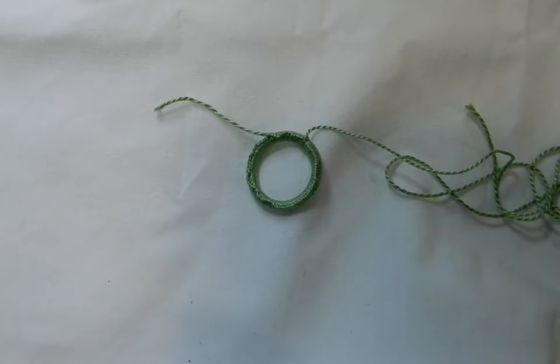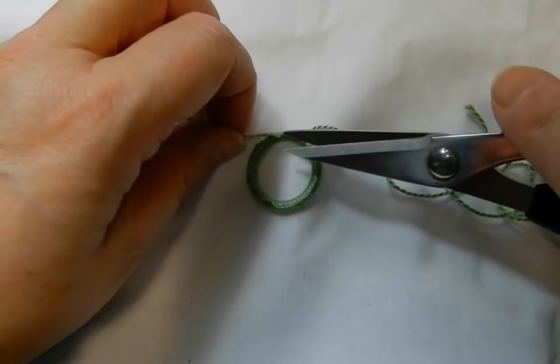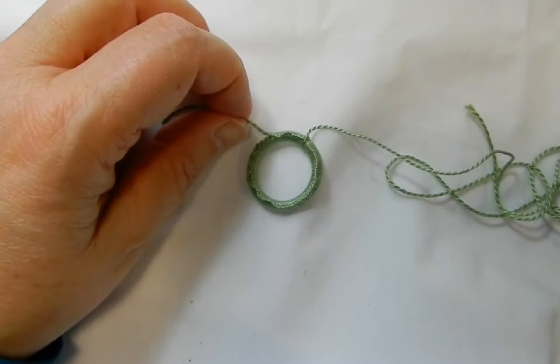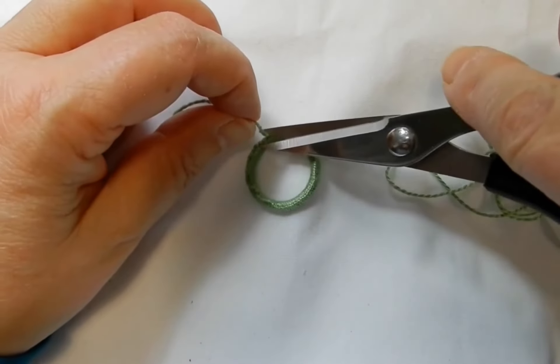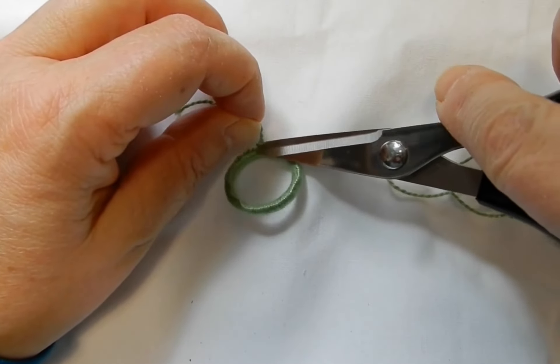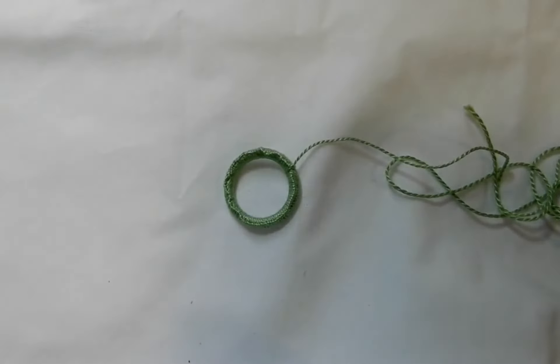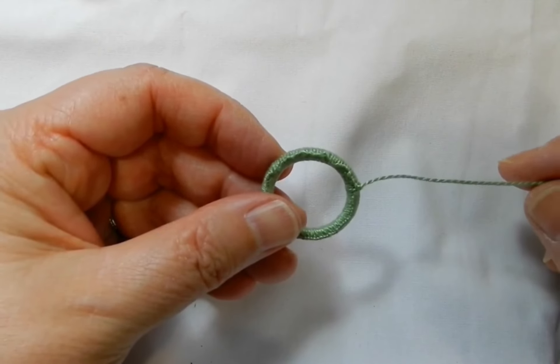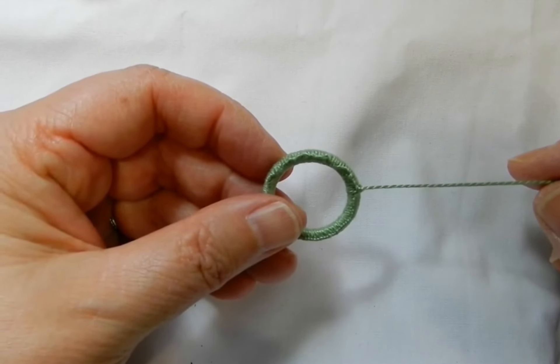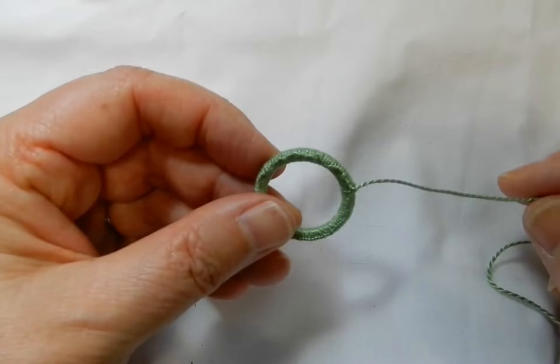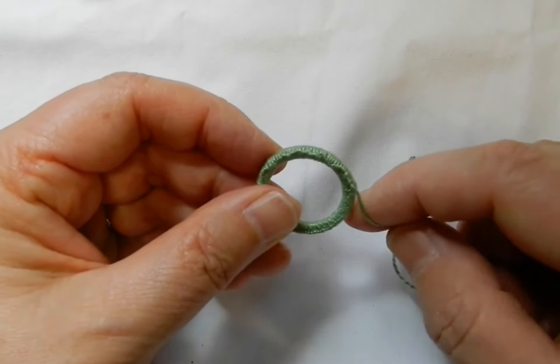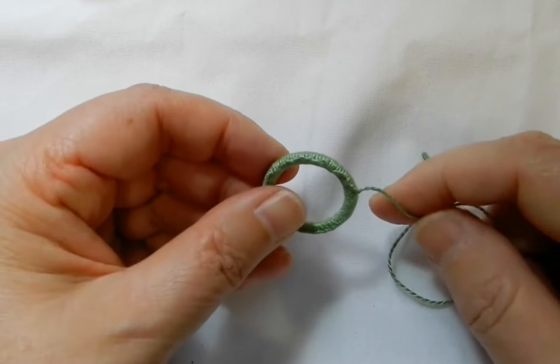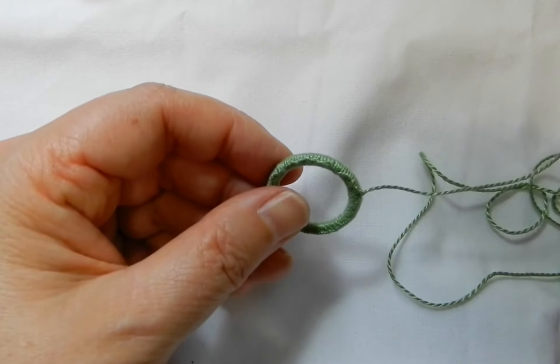We're just going to trim that end off. Be careful you don't snip any of your blanket stitching. You want to catch the loose end without snipping any stitching. Make sure before you snip that it is the short end of the thread you're snipping off, not the long end, because we're going to be using that. Snip the short end.